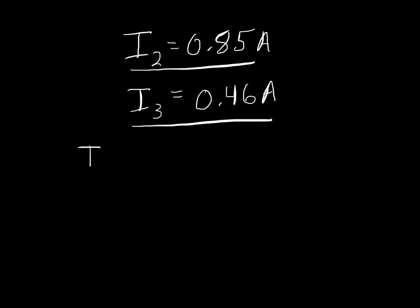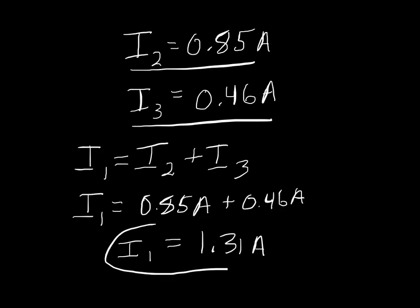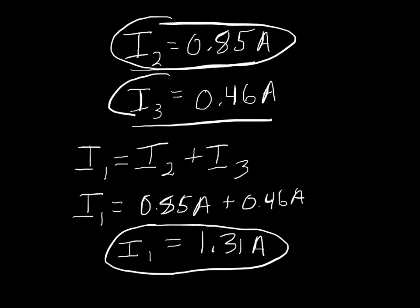Now I know I2 = 0.85 amps and I3 = 0.46 amps. I can find I1 from my original junction rule: I1 = I2 + I3 = 0.85 + 0.46 = 1.31 amps. I have my complete answer: I1 = 1.31 amps, I2 = 0.85 amps, and I3 = 0.46 amps.